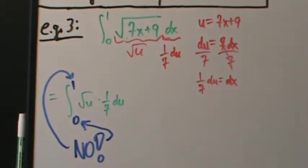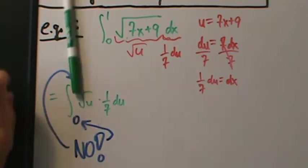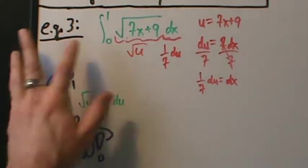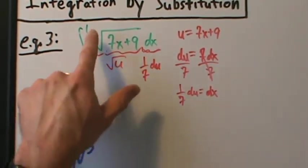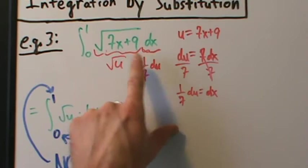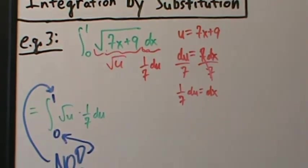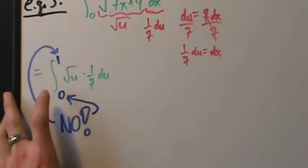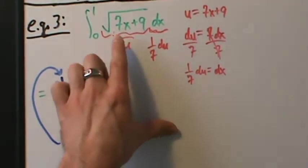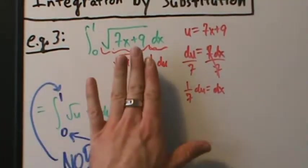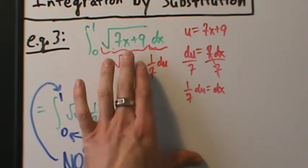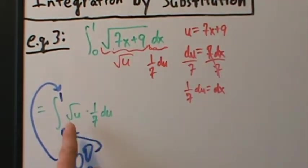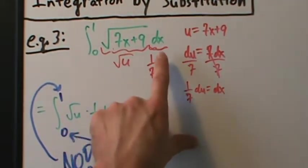Why is that wrong? Because 0 and 1 are limits for x — x is what goes from 0 to 1. Our new integral is in terms of u. We replace all the x's with expressions in u, so 7x + 9 becomes u and dx becomes (1/7) du.